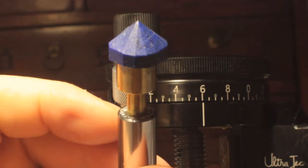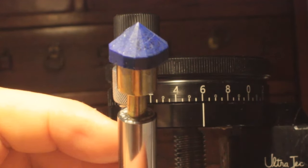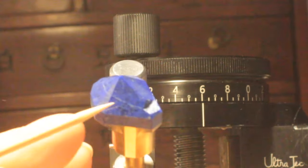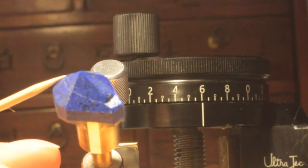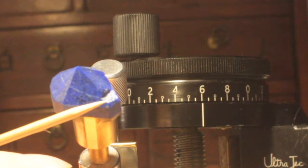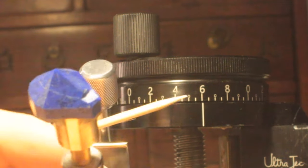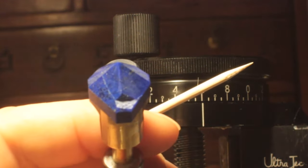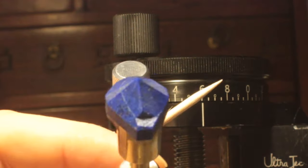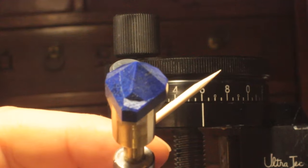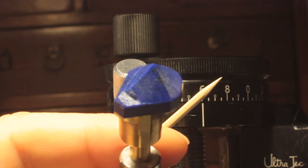For our lapis lazuli, we had a problem. In this piece of rough, before I started cutting, there was a fracture line here. And what happened is, as I was cutting, it broke out. So this is the bottom part, the pavilion. What are the options?